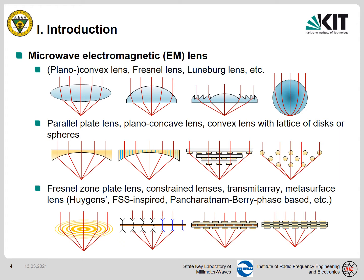There are kinds of microwave electromagnetic lenses in the literature, including the four dielectric lenses — for example, convex lenses, planar convex lenses, face nail lenses, and luminal lenses. Another one is the full metal lenses, including the perplate lenses, planar concave lenses, and convex lenses with a lattice of disks or spheres. Another one is the artificial EM lenses, including the face nail zone plate lenses, constraint lenses, transmitarray, and metasurface lenses. There is no very clear boundary between the transmitarray and metasurface lenses. In recent years, metasurface lenses have become a very hot topic because of their unique EM behaviors.